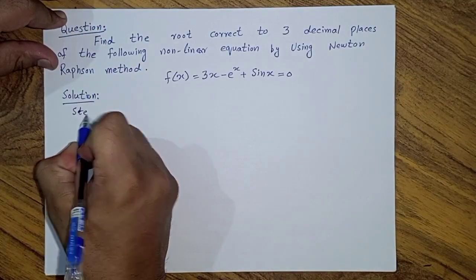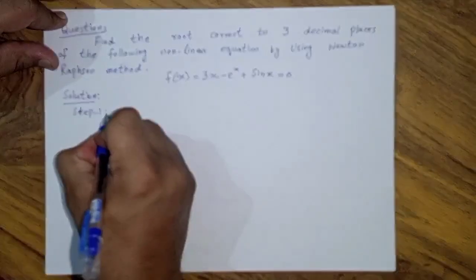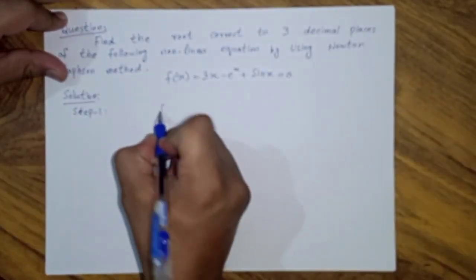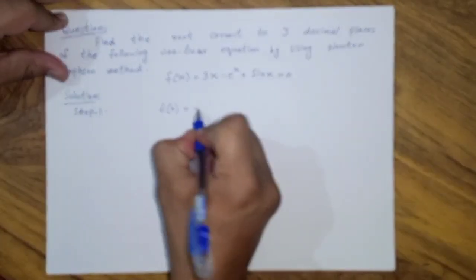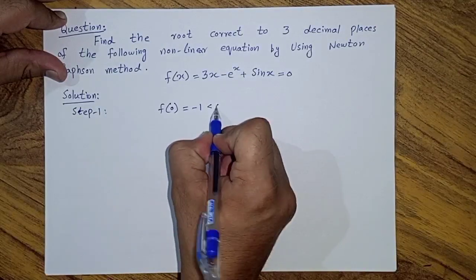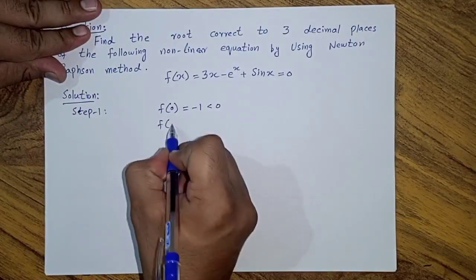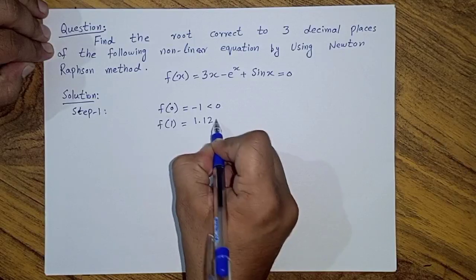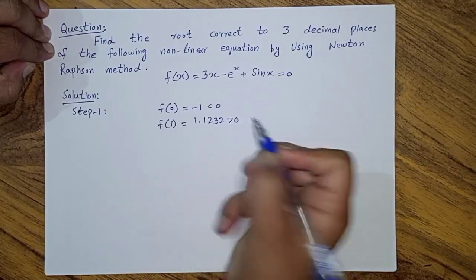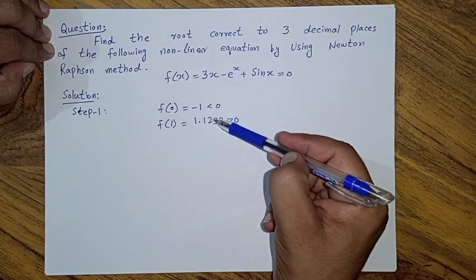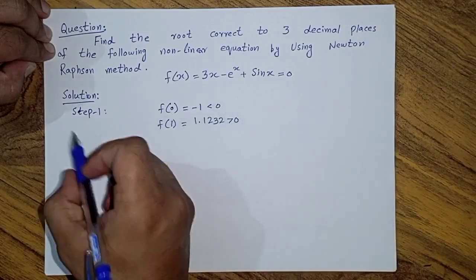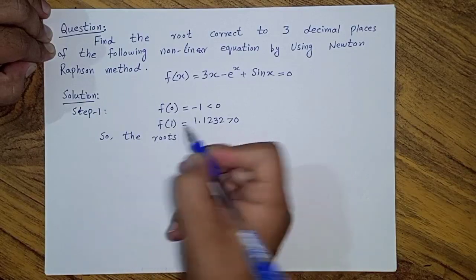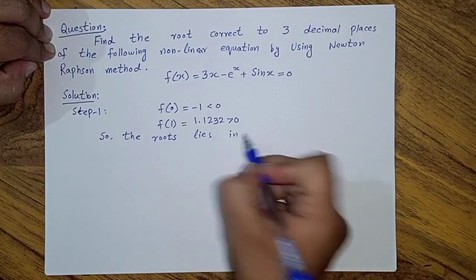Step 1: we determine the interval on which the function has opposite signs. We take f(0) = -1, which is less than 0. We also take f(1) = 1.1232, which is greater than 0. Since the function has opposite signs at 0 and 1, the root lies in the interval [0, 1].